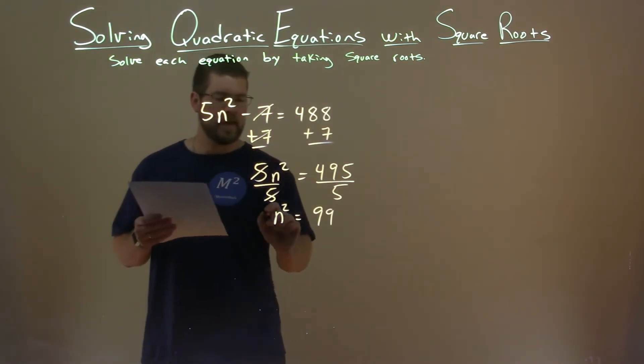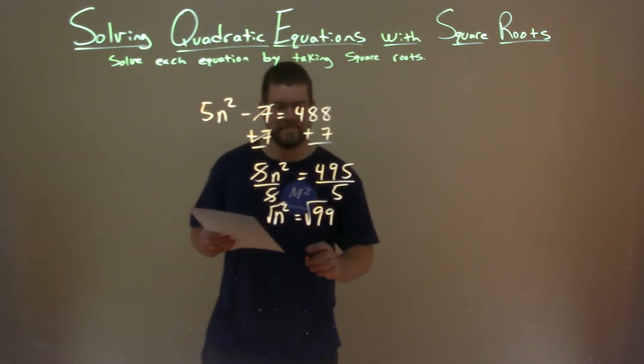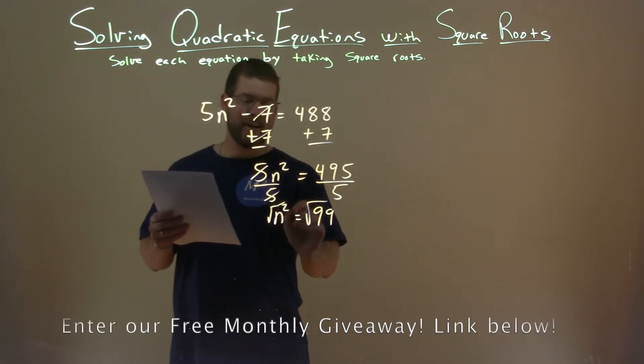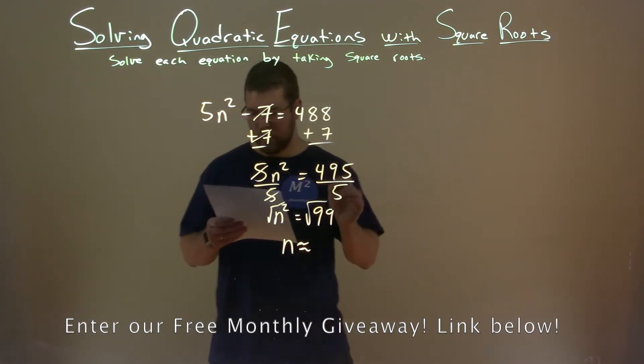Now we want to take the square root of both sides, and please don't say 33. And so, n squared, square root of n squared is n, and it's going to be approximate, square root of 99.